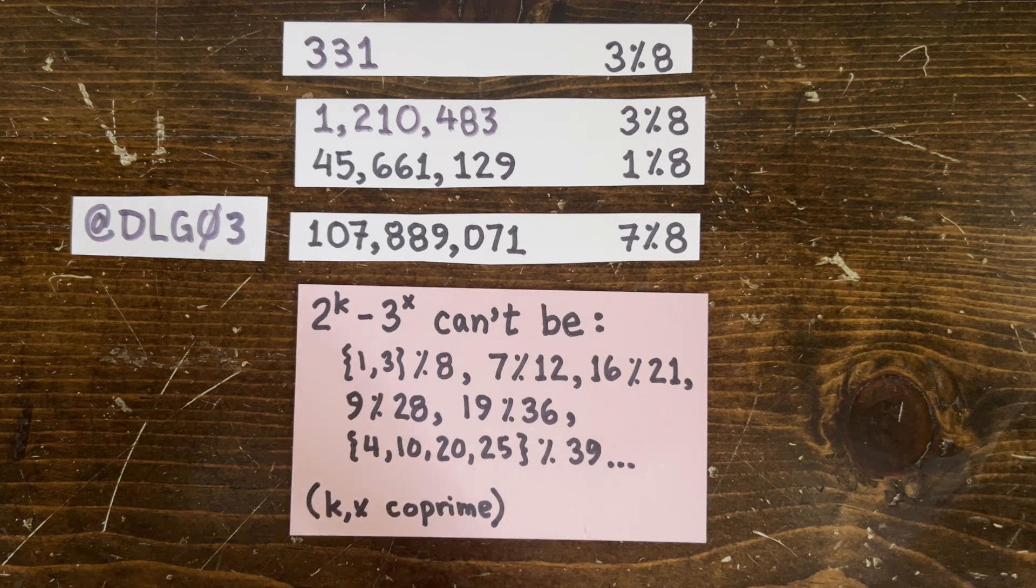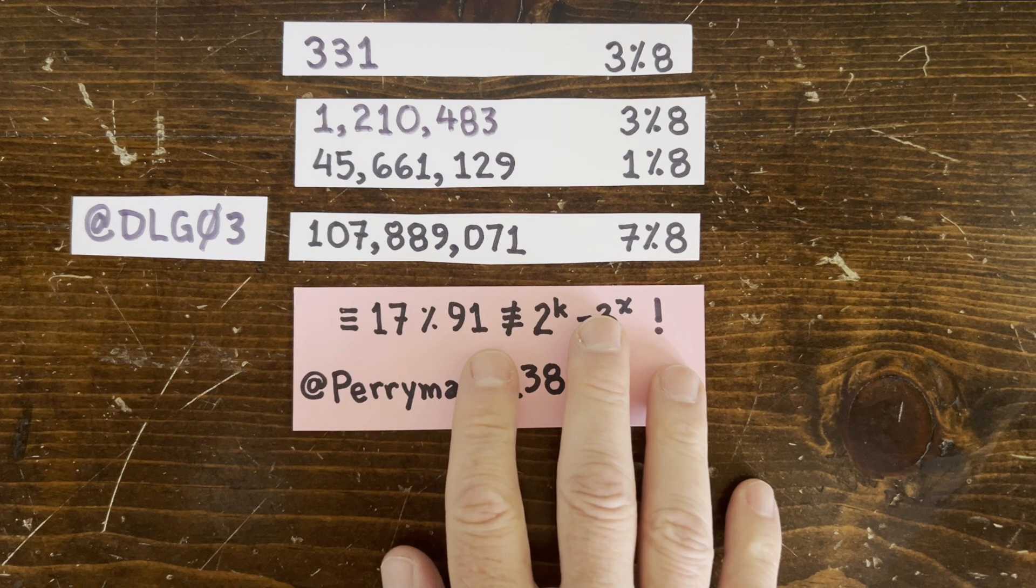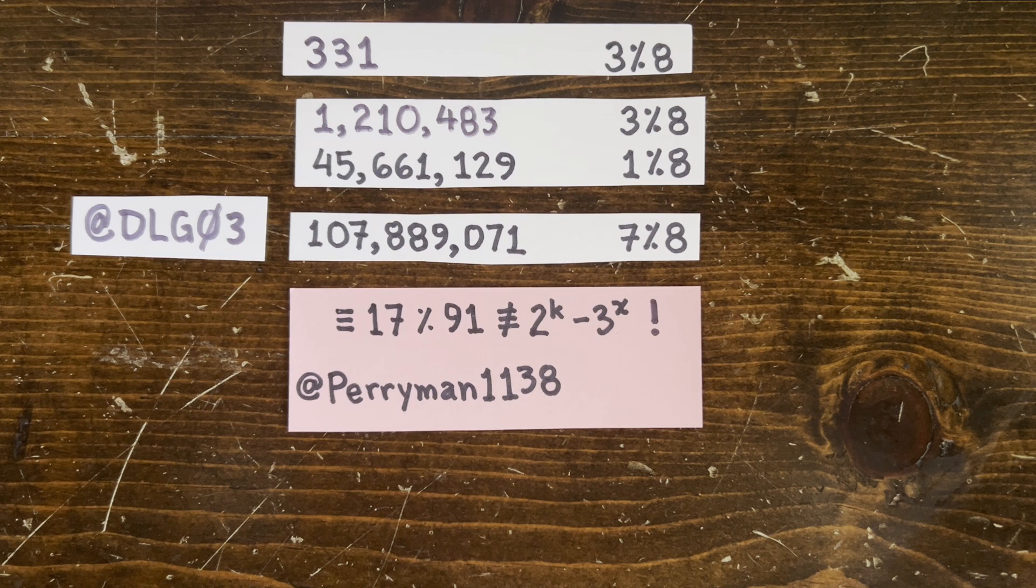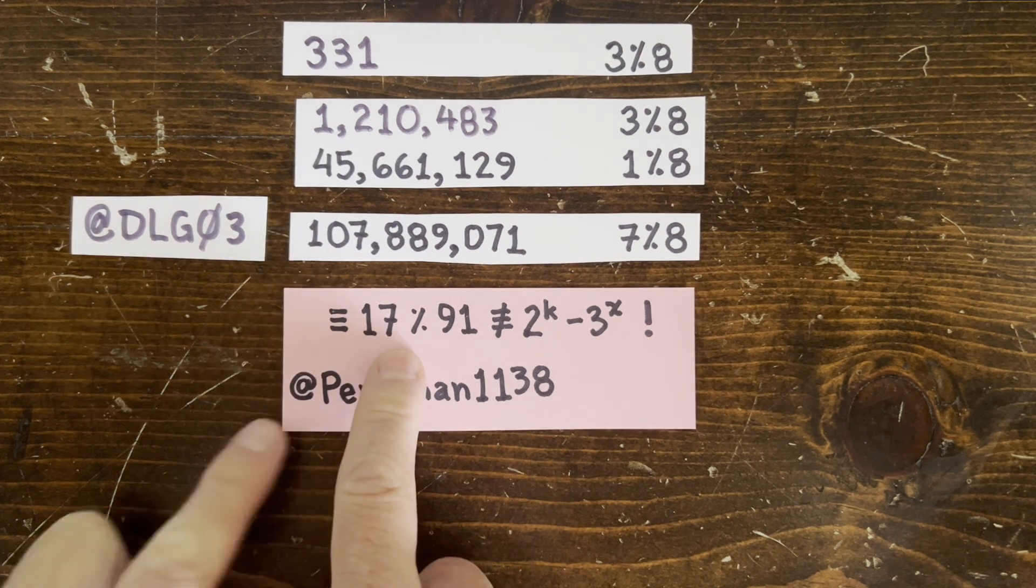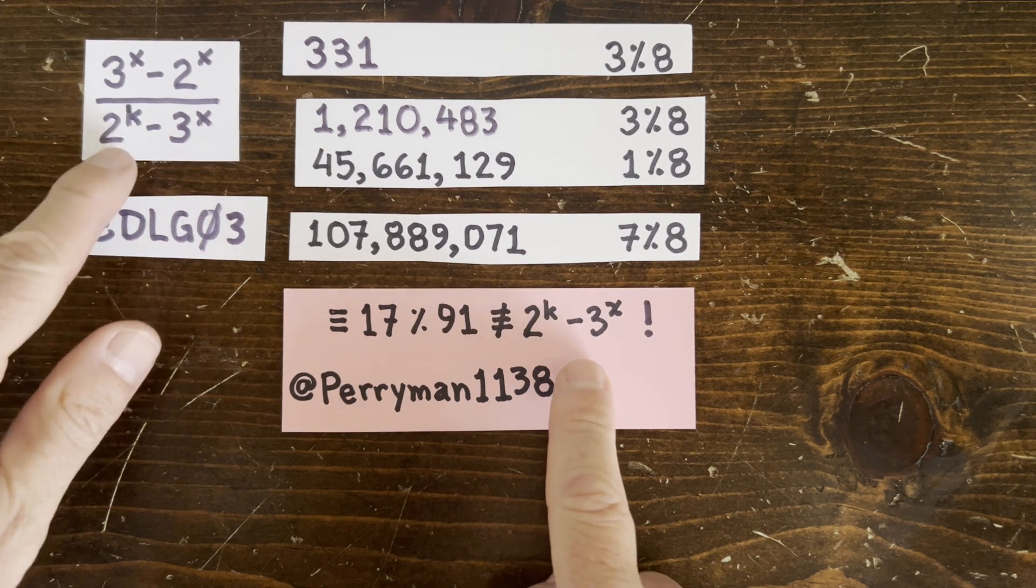So also on the Mathcook community tab, collaborator Perryman138 came up with an amazing reason. This prime is 17 mod 91, but 2 to the k minus 3 to the x can never be 17 mod 91.